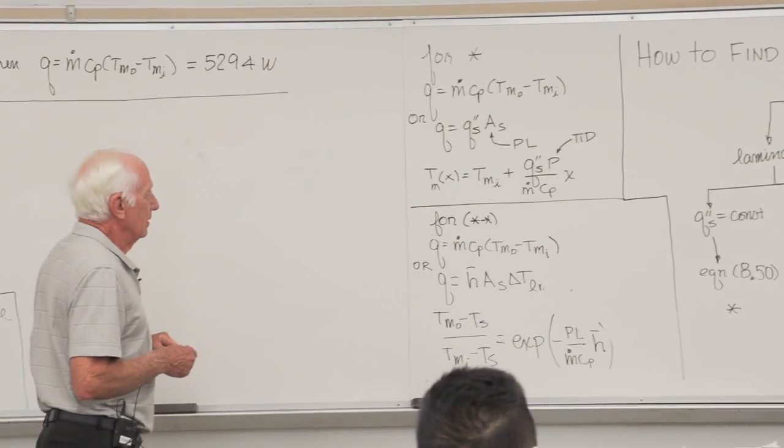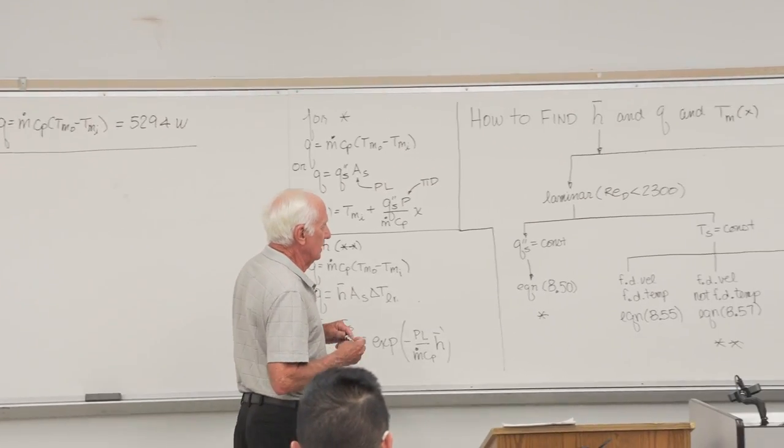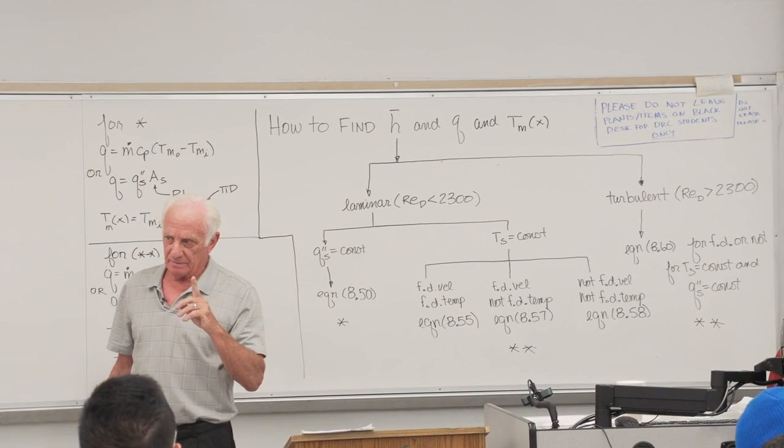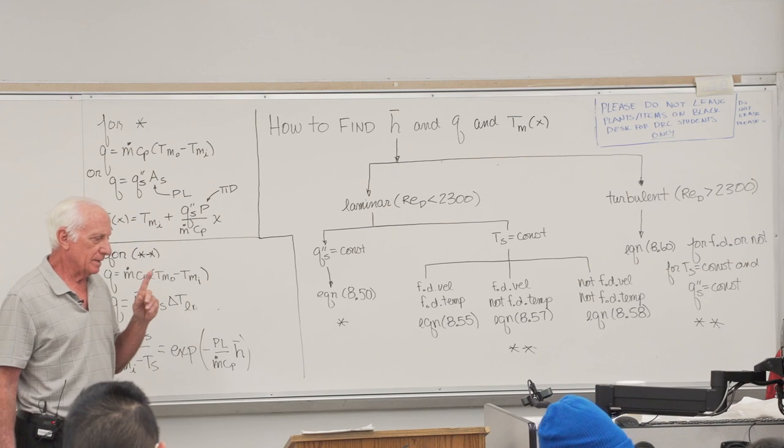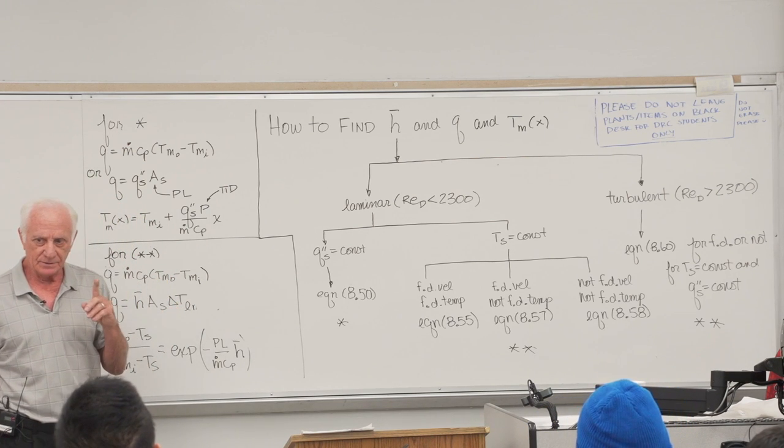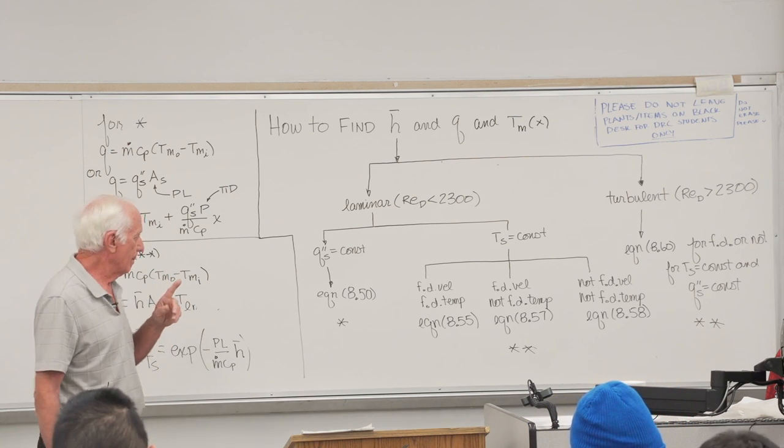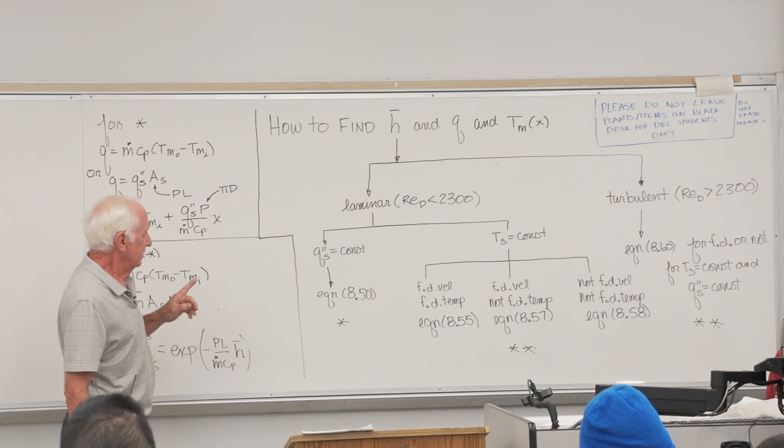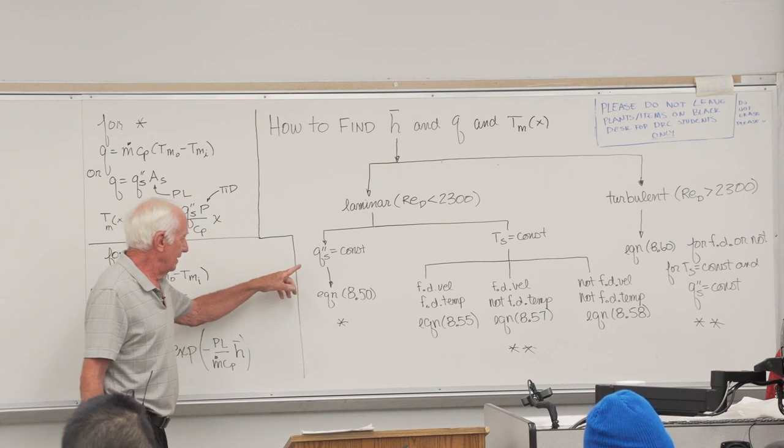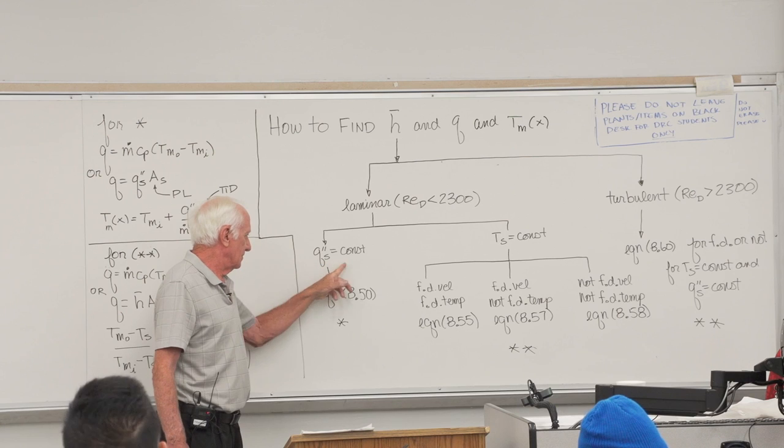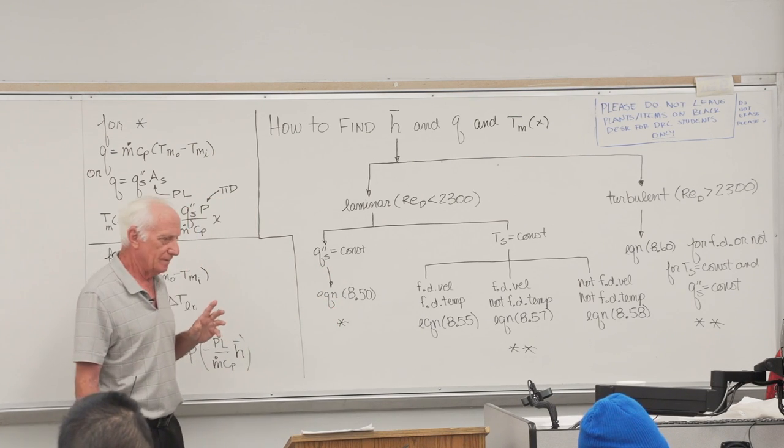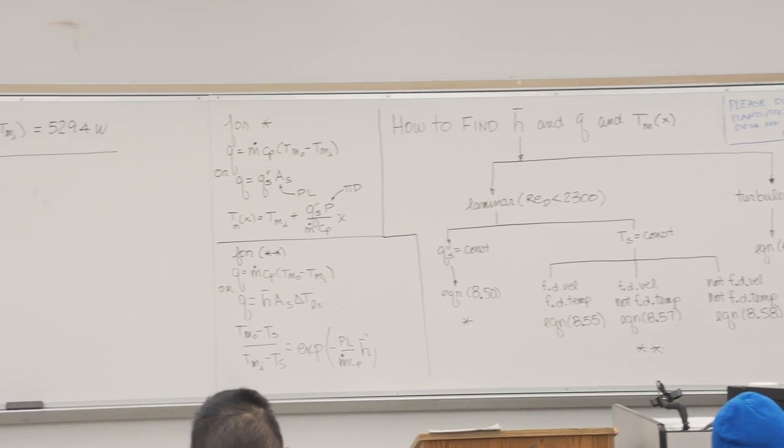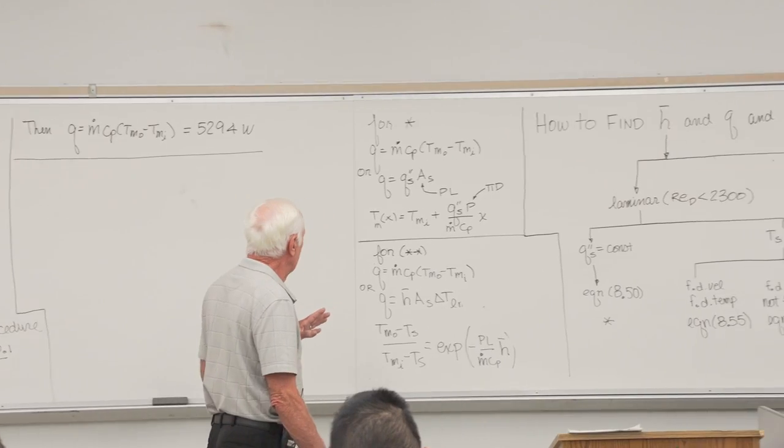Now let's go to laminar flow. If the flow is laminar, there's another decision to make. Did the problem say constant surface heat flux or constant surface temperature? Take the easier one first. If the surface heat flux is constant, we use equation 850 to get H.